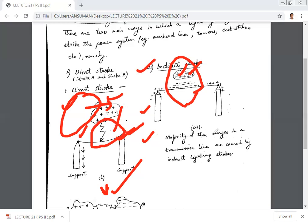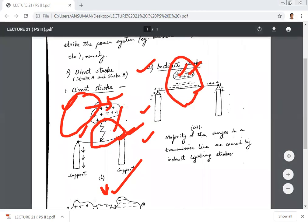Majority of the surges in the transmission line are caused by indirect strokes. There is a cloud. Beneath the cloud, there is charge concentrated. When the cloud moves away or discharges, the charge rapidly moves forward, backward, representing the traveling nature of the charge. Due to these, surges develop in the power system. This is all about this course. Thank you.